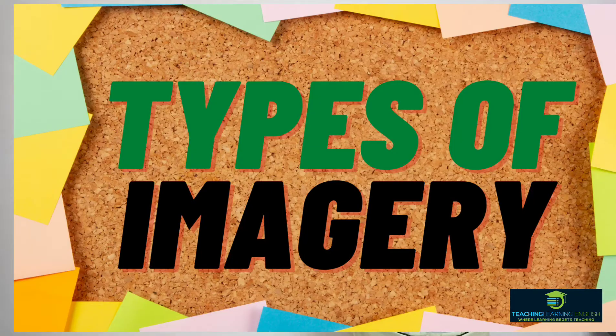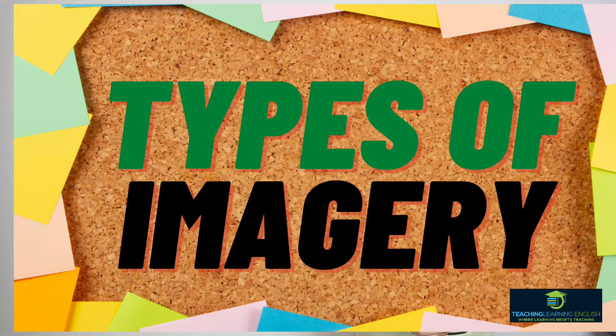To further understand imagery, let's identify the types of imagery. There are usually five types of imagery, based on our human senses, but other writers have added two more. Here are the seven types of imagery.